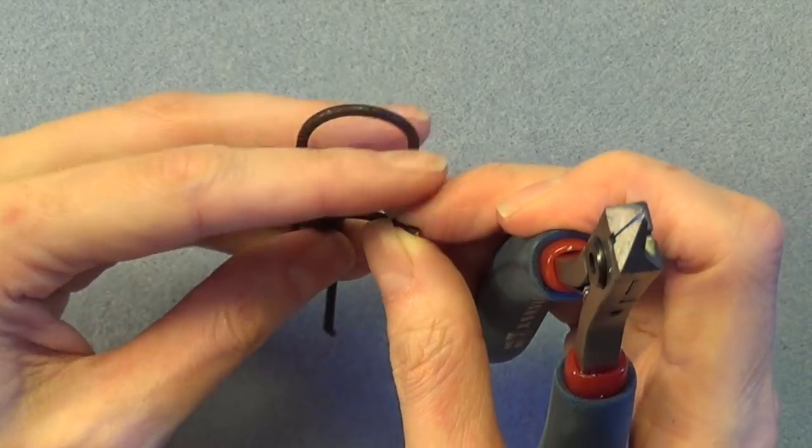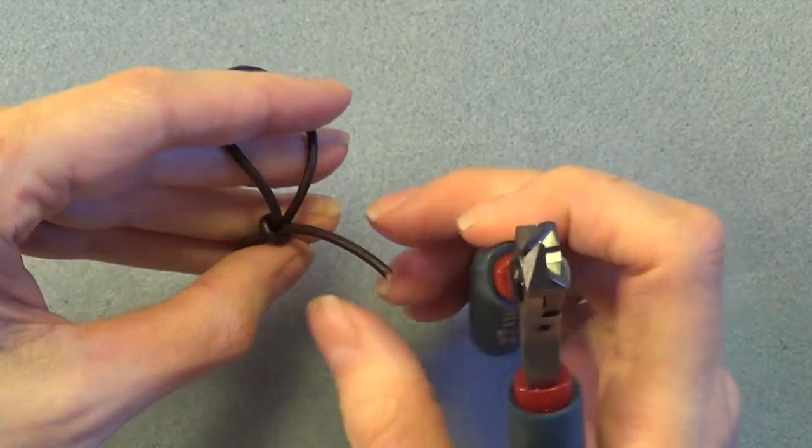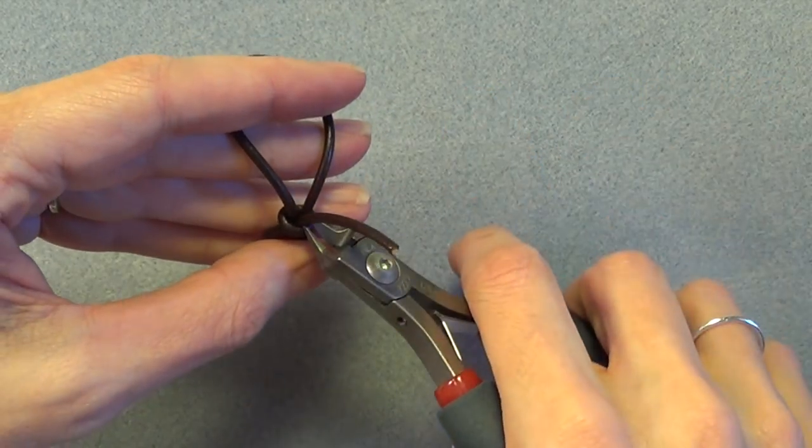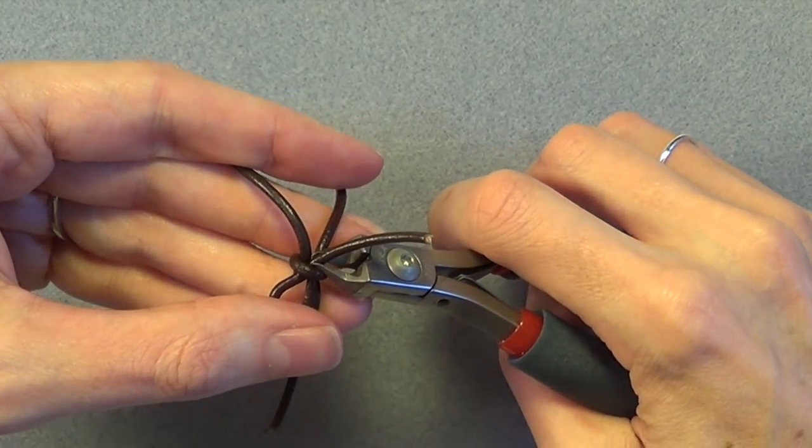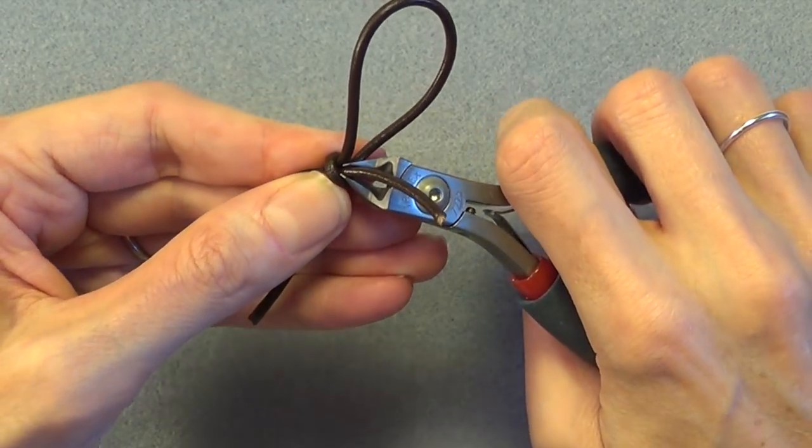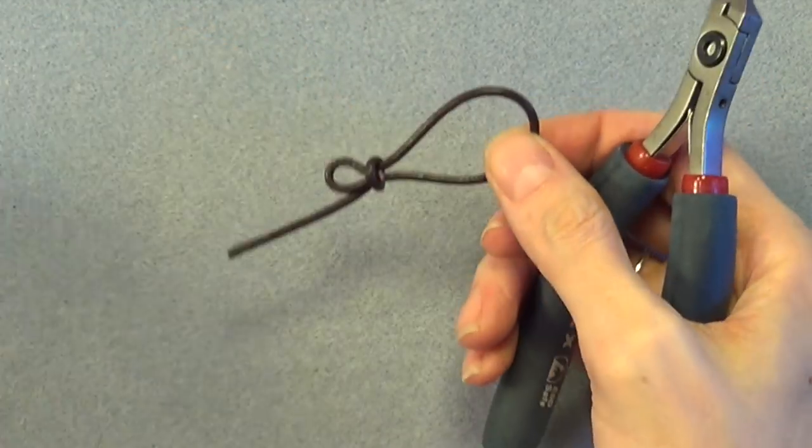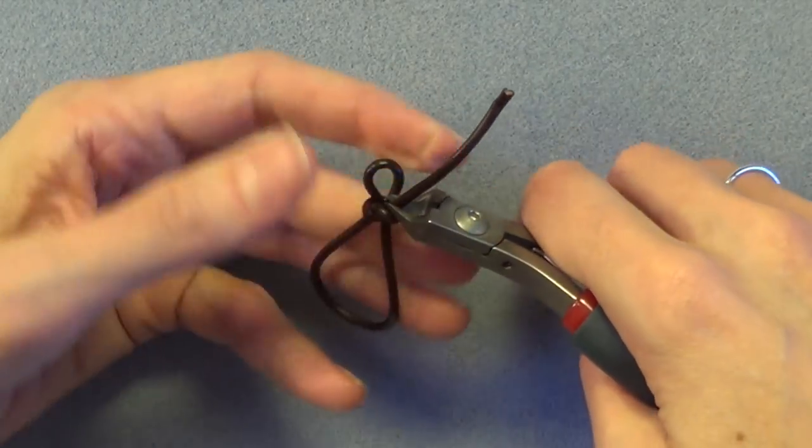When the knot is secure you can trim off the ends of the leather. Use the back side of your flush cutter blade to cut pretty close to the knot being careful not to nick the other pieces of leather. Also be careful not to yank on the loops and do the same for the other tail.